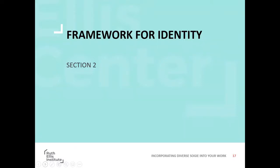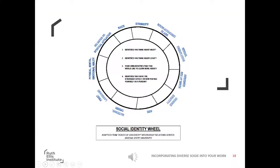Before we discuss pronouns, I want to talk about what I mean when I say 'identity.' The social identities we're thinking about today are sexual orientation, assigned sex at birth, and gender identity. This identity wheel highlights 11 different social identities that we all have. Social identities are simply where we have group membership — we are part of a larger social group when we are around folks who share the same social identity.